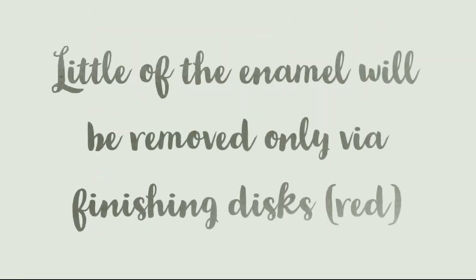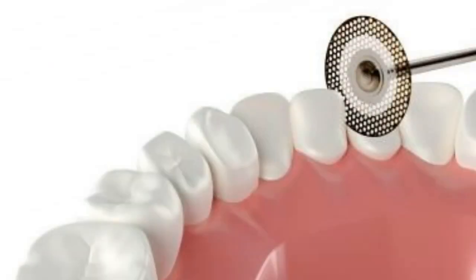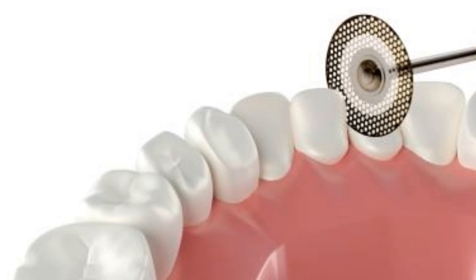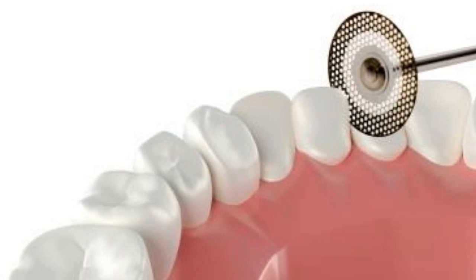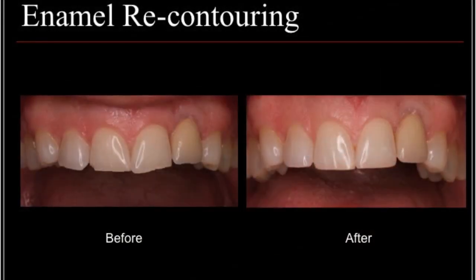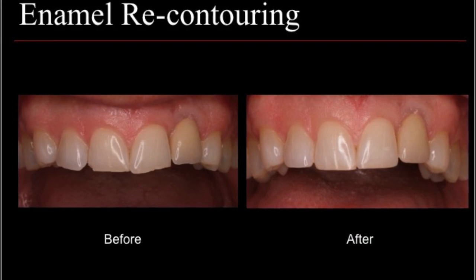For enameloplasty, you need to tell your patient that a little of the enamel will be removed using finishing discs — the ones with a red color. These are the finishing discs used in the enameloplasty procedure. Here is another patient showing an irregular incisal edge.